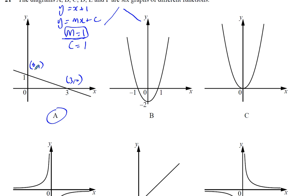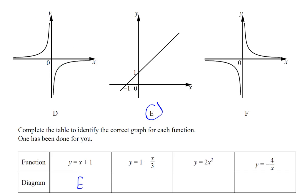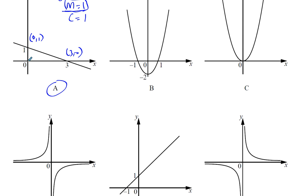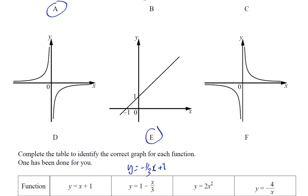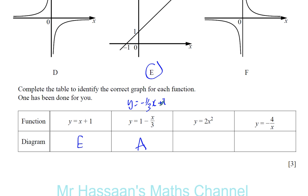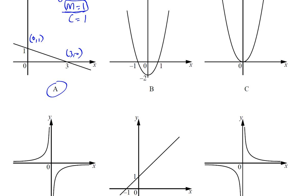If you found the gradient of this, you're going to have 1 minus 0 over 0 minus 3, which is going to be negative 1 third. So this is going to be in the form y equals minus a third x plus 1. So you can see it goes through 1, and the gradient is minus a third. So it must be A.